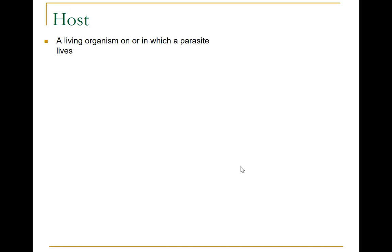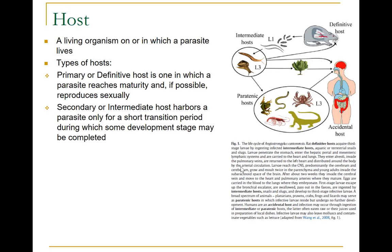A host is a living organism on or in which a parasite lives. There are different types of hosts. The primary host is one in which a parasite reaches maturity and, if possible, reproduces sexually. The secondary or intermediate host harbors a parasite only for a short transition period during which some developmental stage may be completed. A paratenic host is a potential or substitute intermediate host that serves until the appropriate definitive host is reached, and in which no development of the parasite occurs. An accidental host is one that accidentally harbors an organism that is not ordinarily parasitic in that particular species.